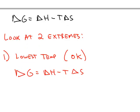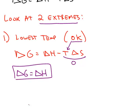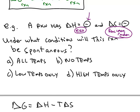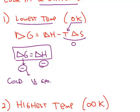The way you figure this out is by looking at the two extremes. The lowest possible temperature you can have is zero Kelvin. If you plug in zero, the second term in the Gibbs formula goes to zero, so delta G is simply delta H. We were told that delta H is a negative number, so under this cold condition, delta G will be negative — and a negative delta G means the reaction is spontaneous.